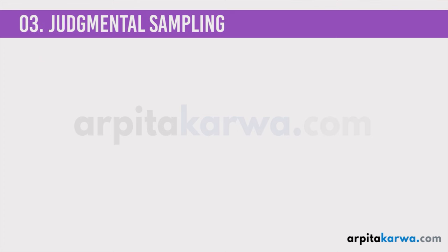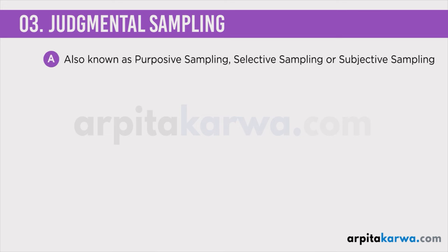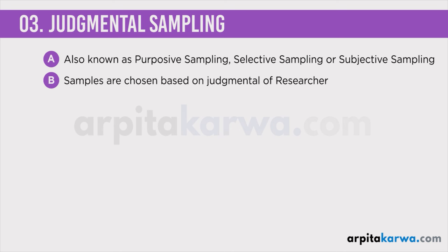Next in line is judgmental sampling. Judgmental sampling is also known as purposive sampling, selective sampling, or subjective sampling. The reason it is known as judgmental sampling is because here we choose the sample based on the judgment of the researcher. This is a kind of non-probability sampling where researchers rely on their own judgment when choosing members of a population to participate in the study.